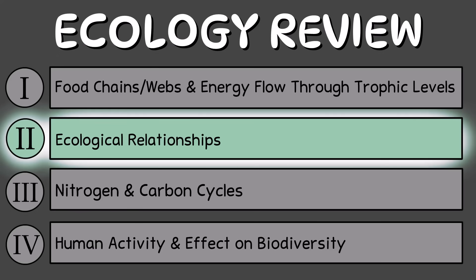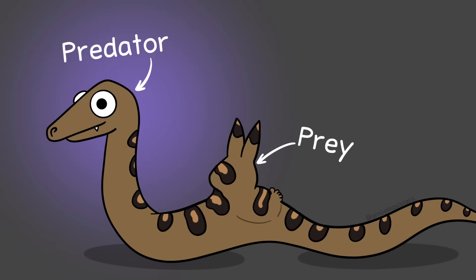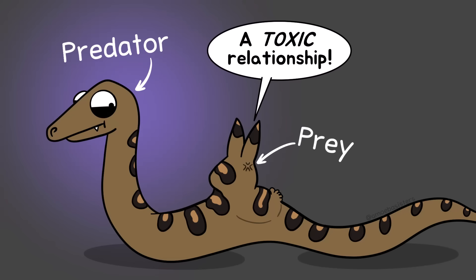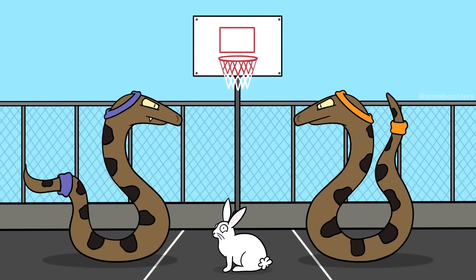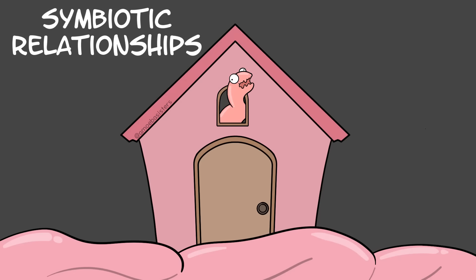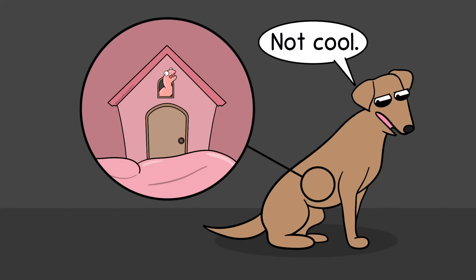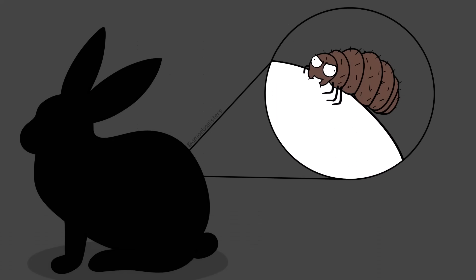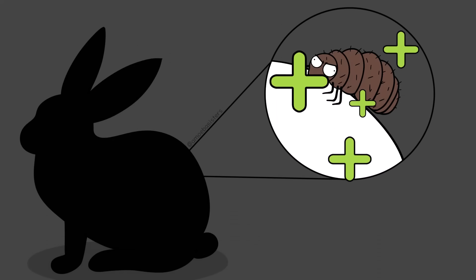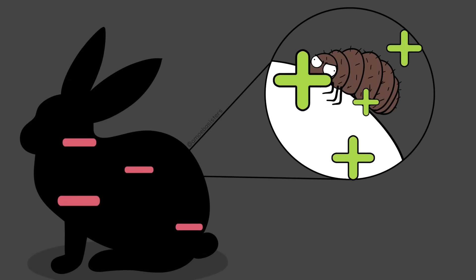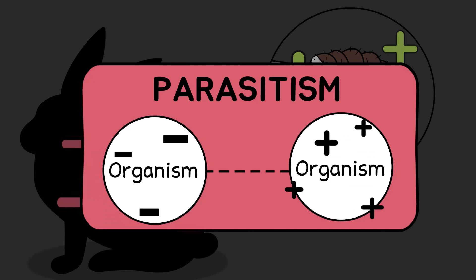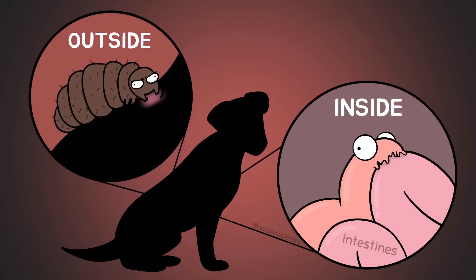Now let's review ecological relationships. We already talked about predator and prey — that's technically a relationship — and competition. But there's more. Consider symbiotic relationships, which mean organisms living together, not necessarily happily. For example, parasitism is a symbiotic relationship. Consider a flea on a rabbit: the flea benefits, the rabbit is harmed. That's parasitism. Parasites like this flea can live on the organism; some parasites live in the organism.